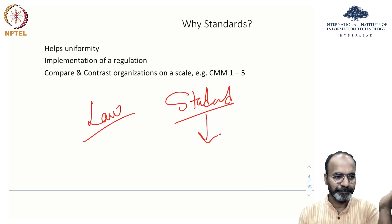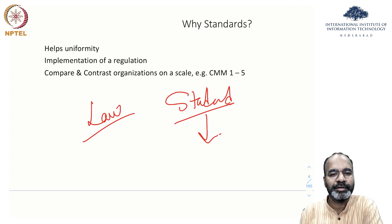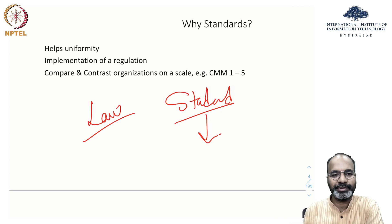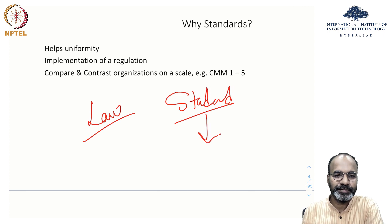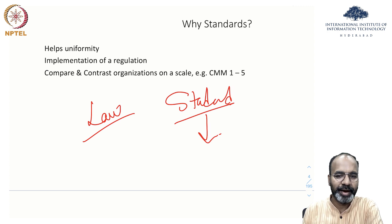For example, NAAC accreditation for academic institutes is a kind of standard. They come and check whether we are following UGC guidelines, teaching courses the way they're supposed to be taught, having the 26 touch points for the class, how many homeworks have been done, what exams have been set up — document all of them and show that you have done it. Similarly, privacy standards do the same.